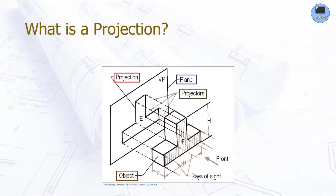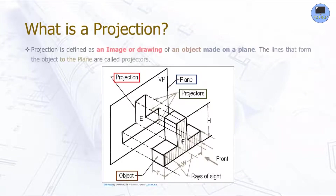First of all, what is a projection? A projection is an image or drawing of an object made on a plane. The lines that connect the object to the plane are called projectors. Please take a look at this image of what I am talking about.